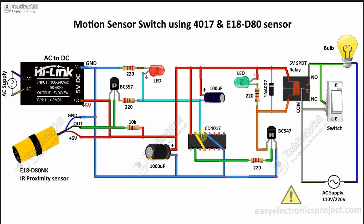Whenever it receives the clock pulse, pin number 2 will change state. When a person enters the toilet the proximity sensor will sense the motion for the first time, so the first clock pulse will be applied to pin number 14. Then pin number 2 will go to high state, and since pin number 2 is connected with the base of the NPN transistor, the transistor will turn on and accordingly the relay will turn on.